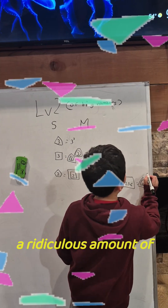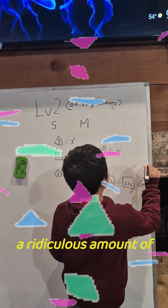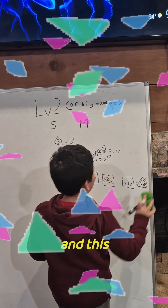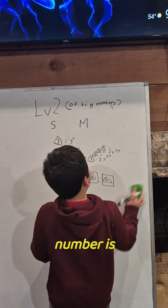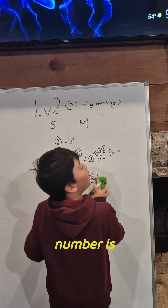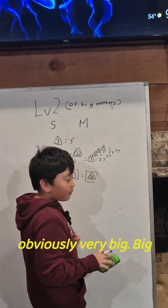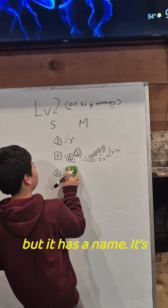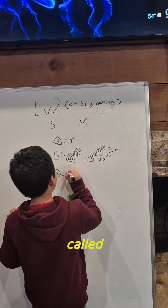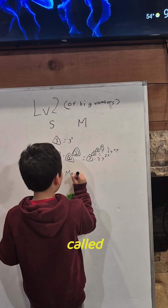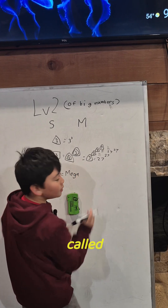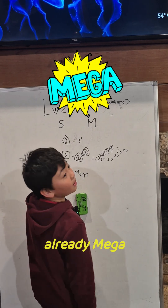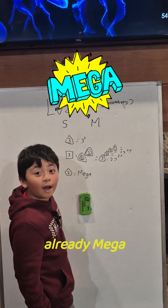That's a ridiculous amount of triangles, and this number is obviously very big. But it has a name — it's called a Mega. And it's already mega big.